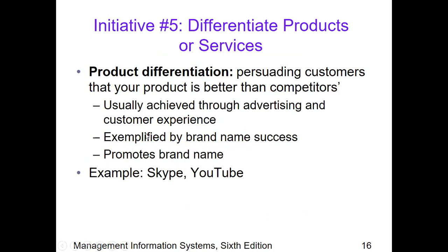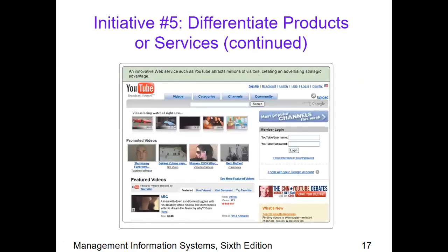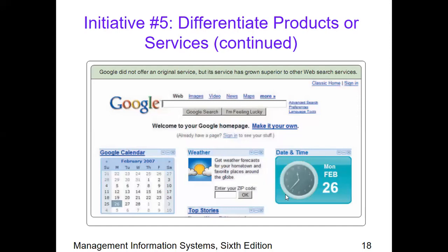Product differentiation means persuading customers that our products are better than others — through advertising, customer experience, brand name success, and promotion. Examples include Skype and YouTube, which promote unique platforms. YouTube is an example where we can view videos. Google is differentiated as a search engine containing a large database and repository of websites and web pages.